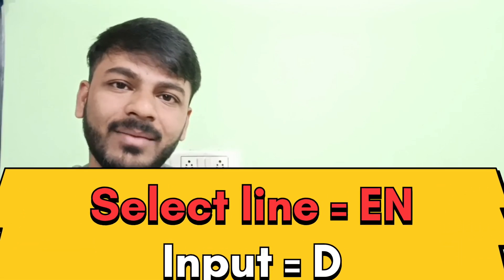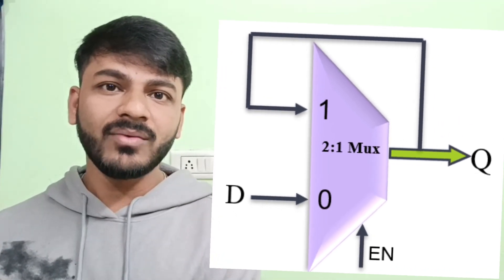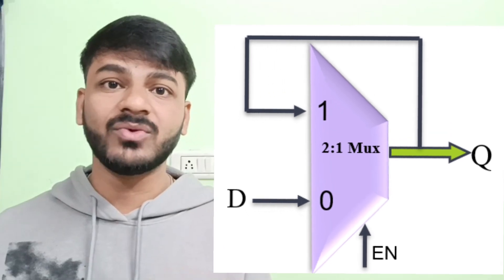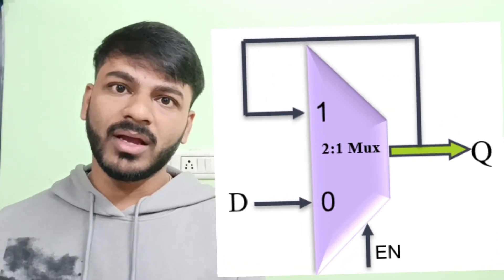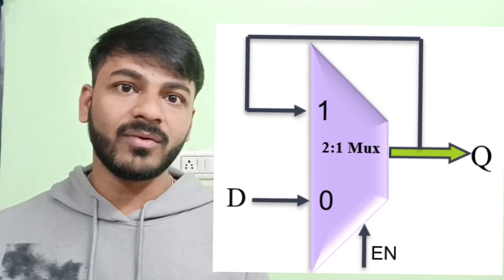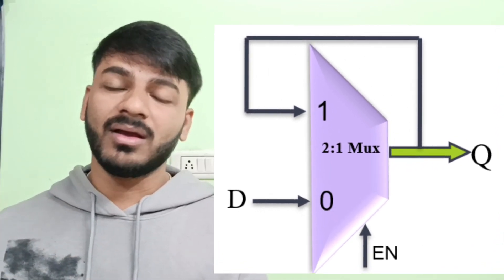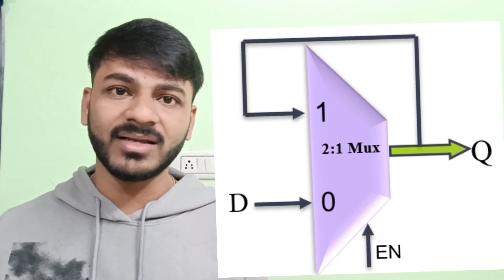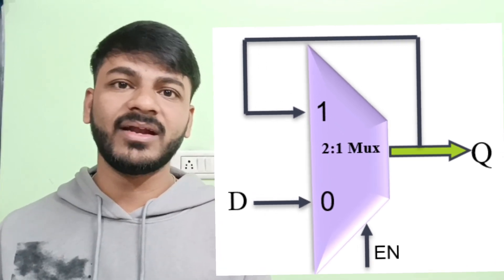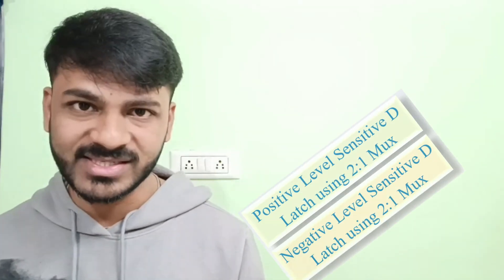Now if we try to implement this by using a 2-to-1 mux, we'll do the same: select Enable as the select line, D as the input, and Q as the output. When Enable is low, we'll connect input D because the truth table says Q will store the value of D — the latch holds the current value of D. When Enable is high, as per the truth table of negative level sensitive D latch, it will hold the previous value, so we'll connect output Q as an input to the 2-to-1 mux. This is how we implement a negative level sensitive D latch using a 2-to-1 mux.